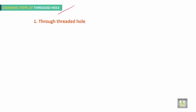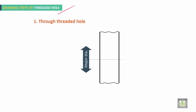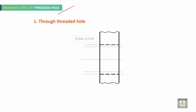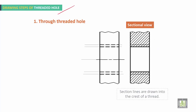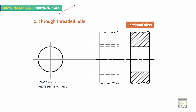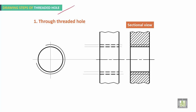Drawing steps for a through threaded hole: draw the center line, mark the major diameter and minor diameter. Draw the root as a dashed line, then draw the crest as a dashed line. For the sectional view, each dashed line becomes a continuous line for both crests and roots, and the hatching lines will cross the root line. For the side view, draw a circle representing the crest and the arc should be outside the circle, crossing one of the axis lines.